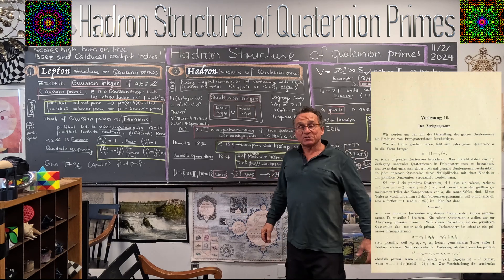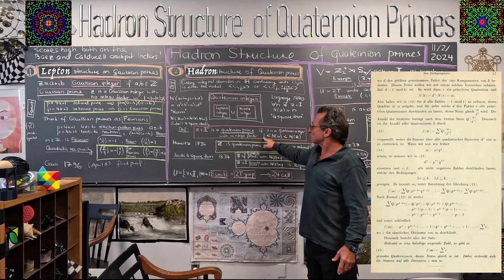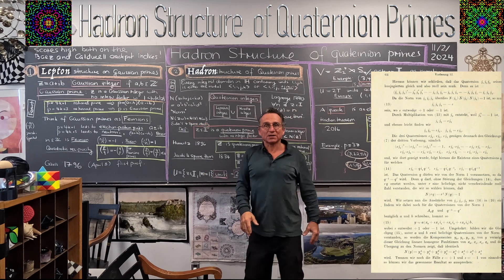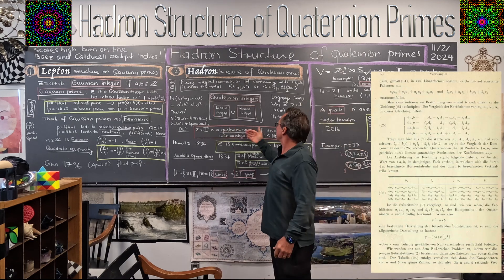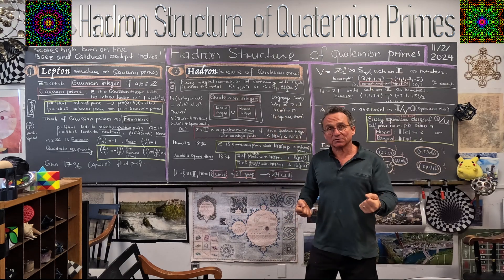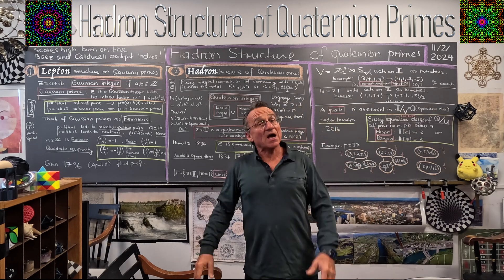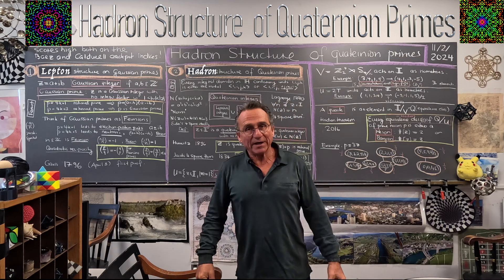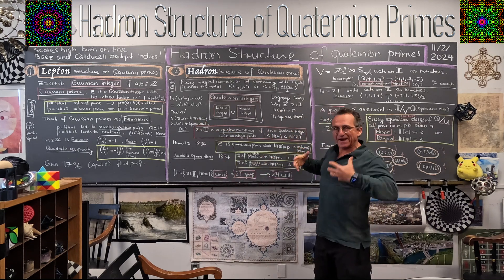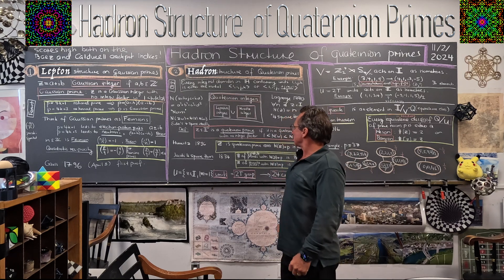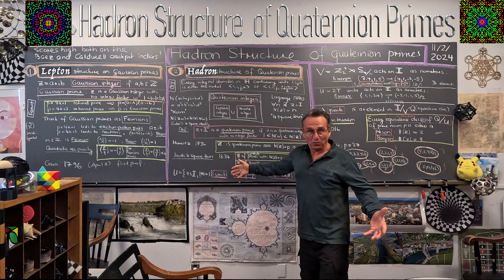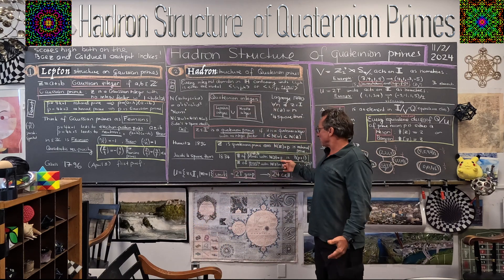Then you can look at the primes. Primes are numbers which cannot be decomposed into smaller ones and which are not units. There is a norm — the square of the length — which is multiplicative, as Euler already knew via the four-square identity. You can then look at the quaternion primes: the integers which you cannot factor anymore. Hurwitz showed these are exactly the integers with prime norm. If it has prime norm it cannot be factored by this identity, and the converse also holds. So every quaternion prime has this form.